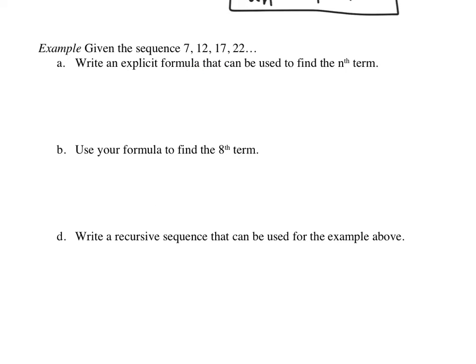Now we're going to look at a different sequence. Our sequence is 7, 12, 17, 22. We want to write an explicit formula that can be used to find the nth term. So I want you to pause. I want you to ask yourself, is the sequence arithmetic or is it geometric? Remember, we just had a geometric example, so there's a pretty good chance it's arithmetic. So let's look at it.